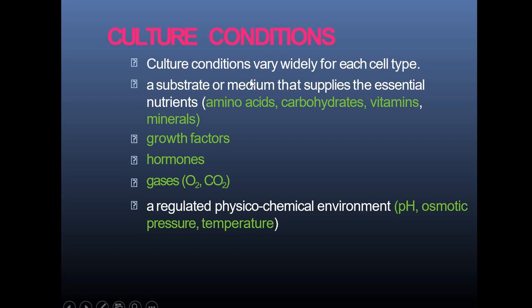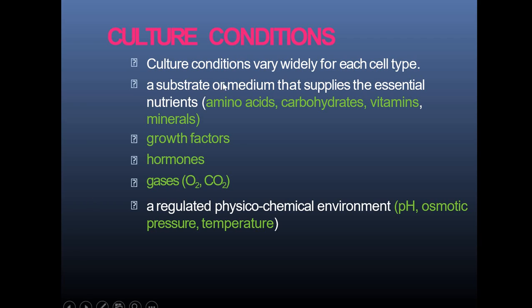Regarding culture conditions: you need a healthy, rich environment containing amino acids, carbohydrates, vitamins, and minerals. Growth factors and hormones are also required, and a proper physiochemical environment must be maintained for the nutritional needs of the culture — so the cells can grow and multiply. A proper pH, osmotic pressure, and temperature must be maintained.